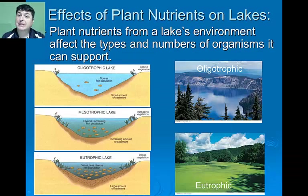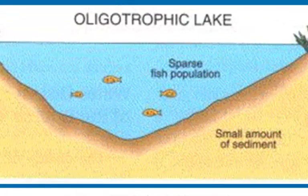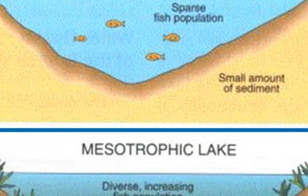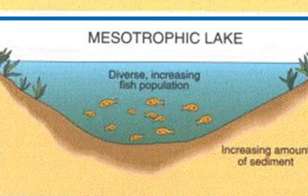Plant nutrients from a lake's environment can affect the types and numbers of organisms it can support. Oligotrophic lakes have very low levels of nutrients and very little organic material along the lake bottom, and as a result can only support a very sparse fish population. Mesotrophic lakes are moderately enriched and natural processes of sediment accumulation and aquatic vegetation growth are starting to occur, allowing them to support a diverse and increasing fish population.